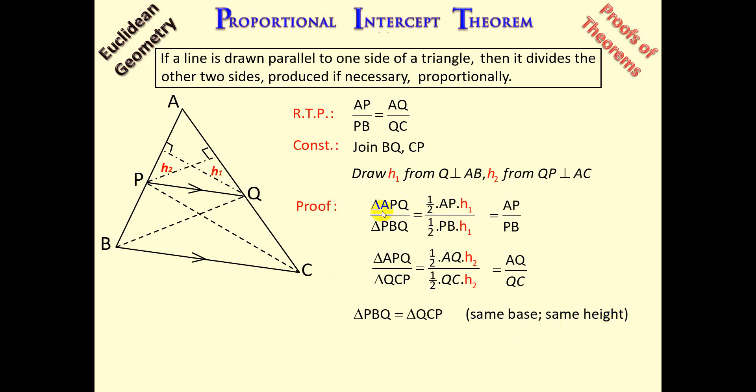So once again, we see that triangle APQ is common to both ratios. And we're now concluding that the area of triangle PBQ is equal to the area of triangle QCP.